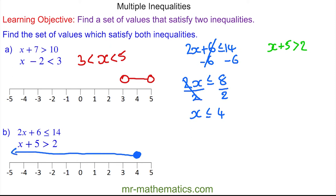For the next equation we'll take away 5 from both sides and these will cancel to make 0, so x is greater than 2 take away 5, which is negative 3. We have a hollow circle at negative 3 going to the right.